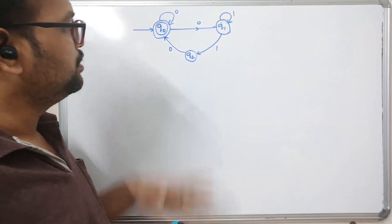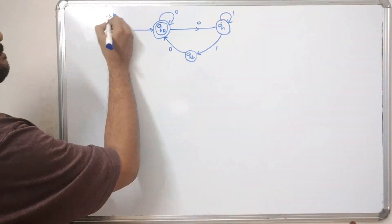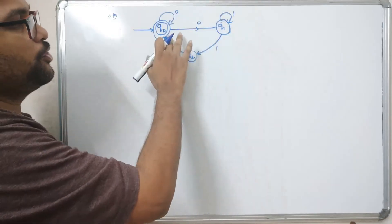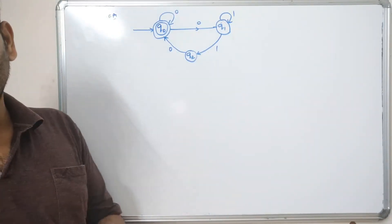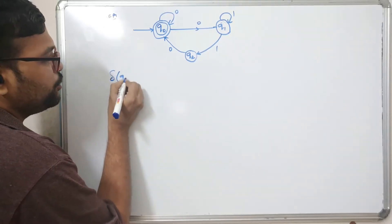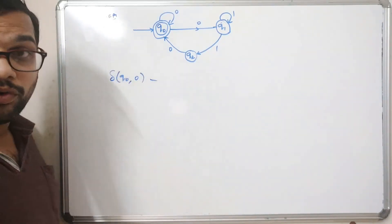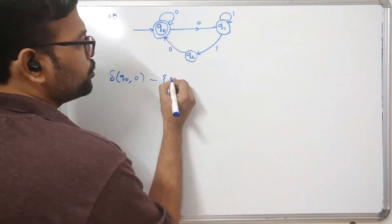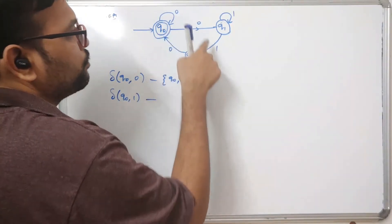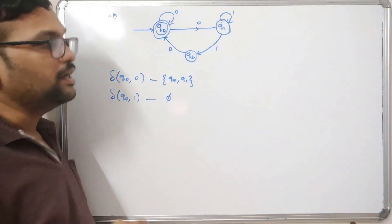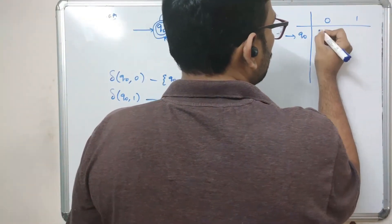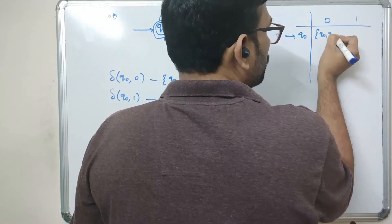Here is another NFA example. You can see q0 on zero has two paths: q0 and q1. There is no transition for q0 with one. Start with the initial state q0. q0 over zero moves to {q0, q1}, and q0 on one there is no state so it's phi. Constructing the table starting with q0 as the initial state, we get new states {q0, q1} and phi.